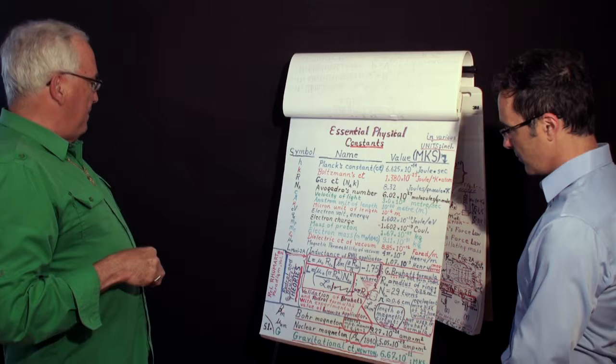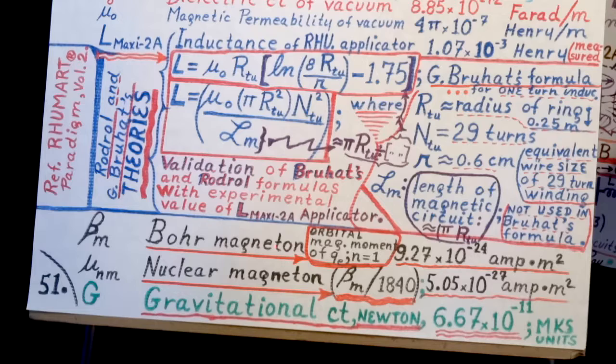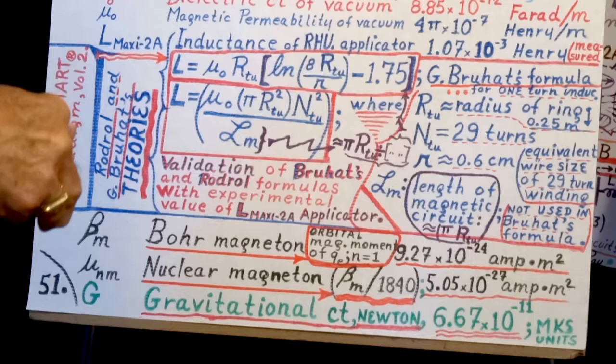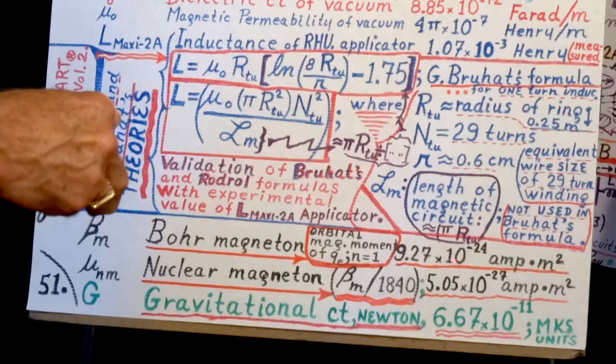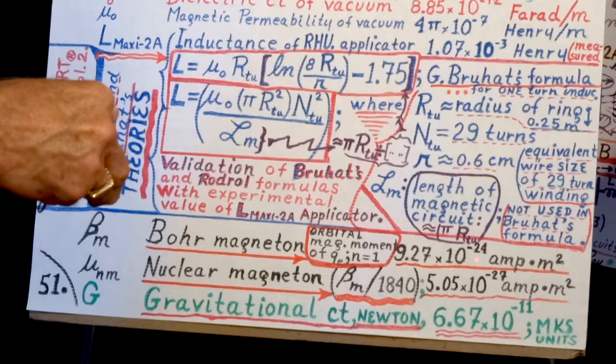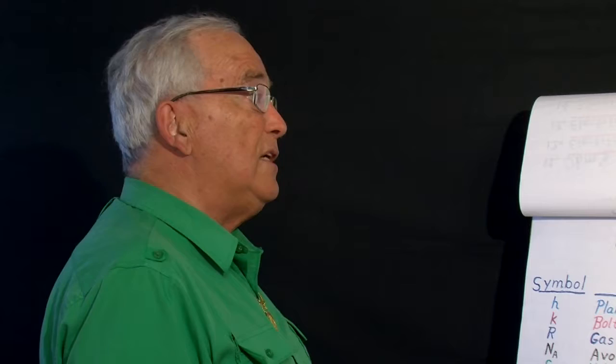BM is what we call the Bohr magneton. This is the magnetic moment of the electron going around a proton. It creates a magnetic moment perpendicular to this, and that's the value of this magnetic moment in ampere square meter. It's 9.127 times 10 to the minus 24. So it's very small.